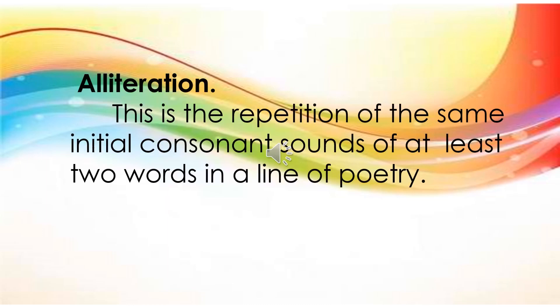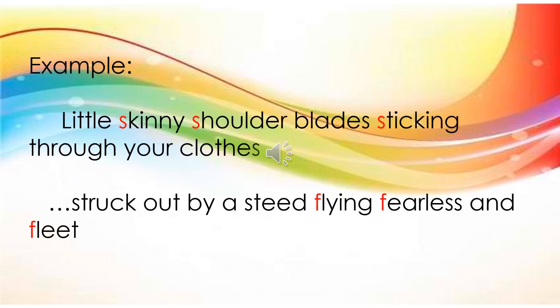Another type of sound device is alliteration. This is the repetition of the same initial consonant sound of at least two words in a line of poetry. Example: 'Nails, kidney, shoulder blades sticking through your clothes.' Another example: 'Struck out by state flying fearless and fleet.'